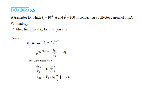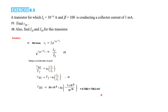Plugging in the values — VT is 25 millivolts, which is always 25 in this book — then natural log of IC which is 1 milliampere, divided by IS which is given as 10 to the power minus 16. Solving, we get VBE equal to 748.3 millivolts.